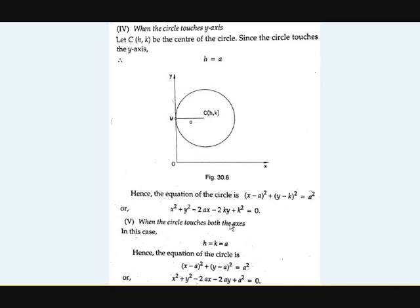If the circle touches the y-axis, it works the same way but in the opposite direction. Here a equals h. Substituting and expanding, the equation becomes x squared minus 2hx minus 2ky plus k squared equals zero.